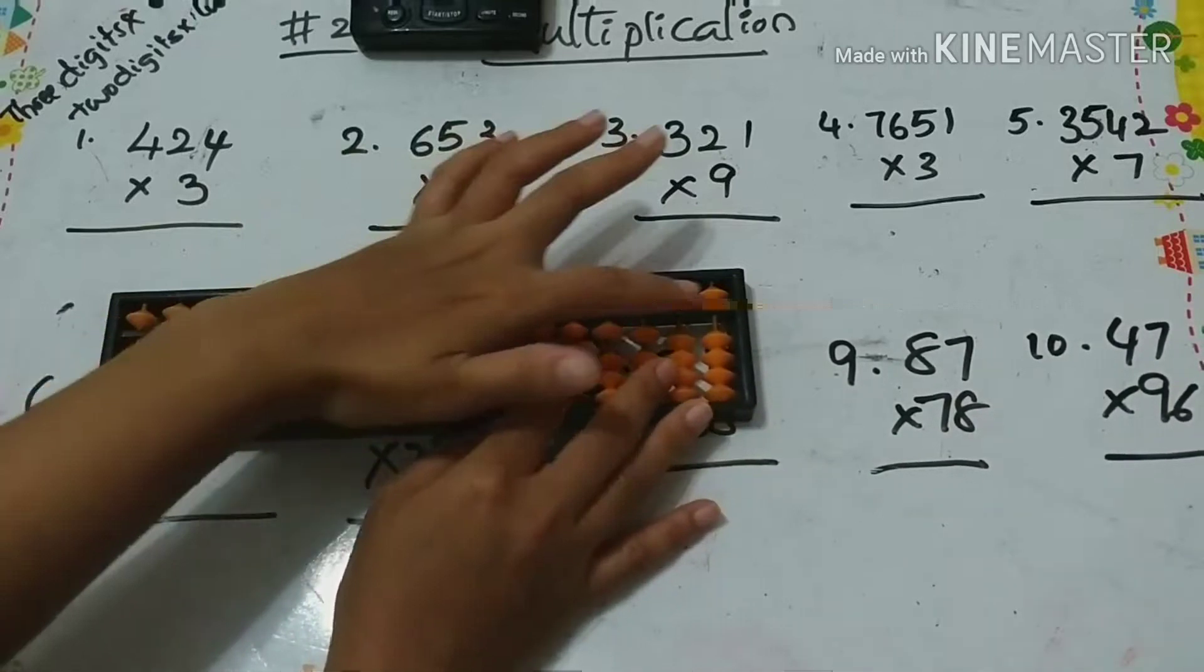First, four threes are twelve: one-two, one in fourth column and two in third column. Next, three twos are six, so zero six. Again, four threes are twelve, so one-two. The answer is 1272.